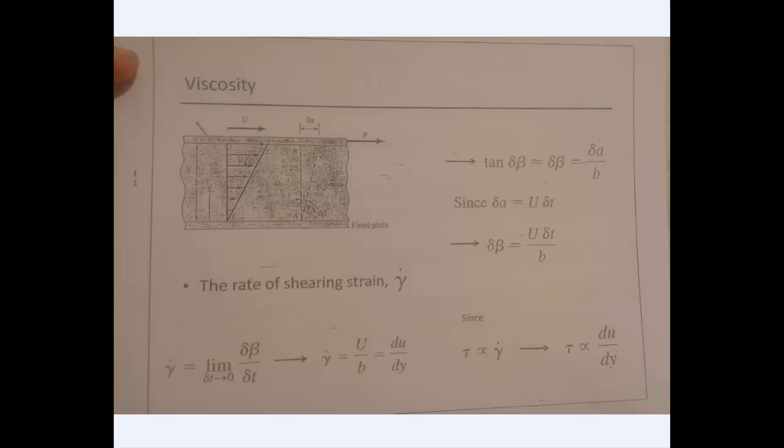We all know that the shearing stress is linear with the shearing strain. Since if I put a larger force, it will move more. It's proportional. So this is why tau is proportional to du over dy.